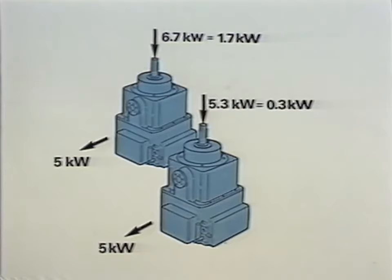Let's compare the two shown. They both generate the same capacity, namely 5 kilowatt. The pump at the top has a poor level of efficiency and therefore demands an installed capacity of 6.7 kilowatt in order to generate 5 kilowatt. The energy loss here is therefore 1.7 kilowatt.